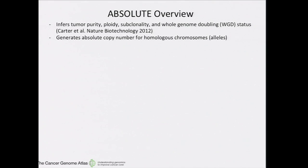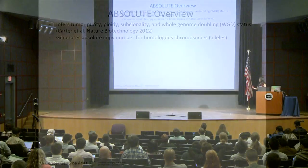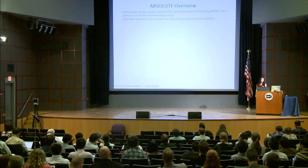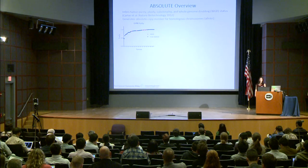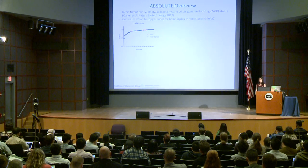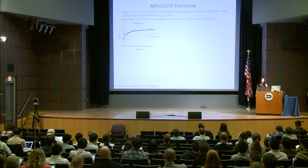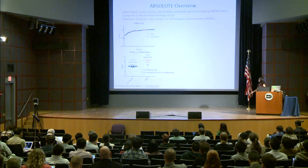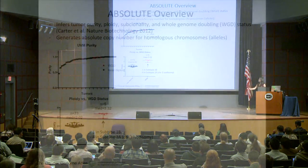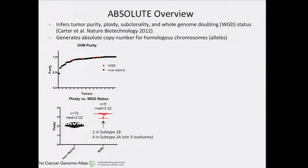We ran ABSOLUTE, which is an algorithm that infers tumor purity, ploidy, subclonality, and whole genome doubling status, and generates an absolute copy number profile for each homologous chromosome or allele. The majority of UVMs are very high purity with a median of 0.95. Plotting ploidy versus whole genome doubling status, most of these tumors are near diploid with a median ploidy of 2.02. However, there are five tumors that are whole genome doubled, and four of them are in subtype 2A and actually have a chromosome 3 isodisomy.